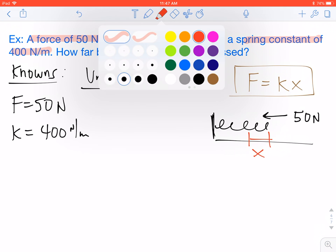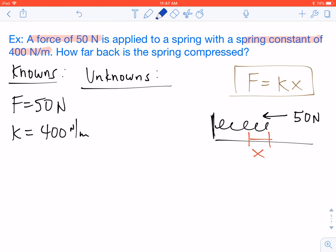So that's our k value. And then lastly, we want to know how far back is the spring compressed. So that's our x value. So from this point, we're just going to plug in our values into our equation.